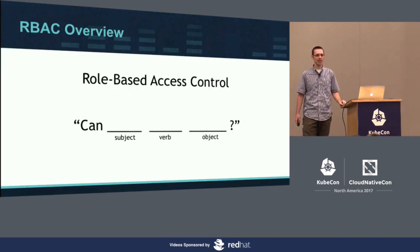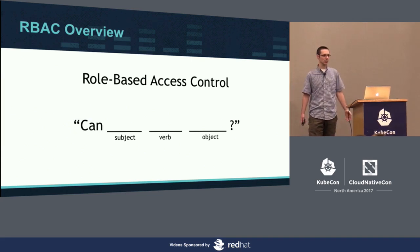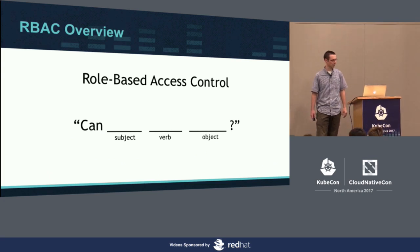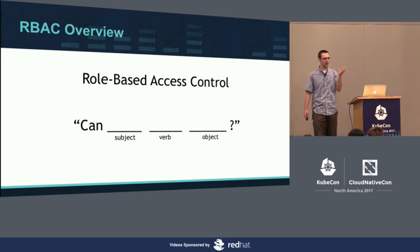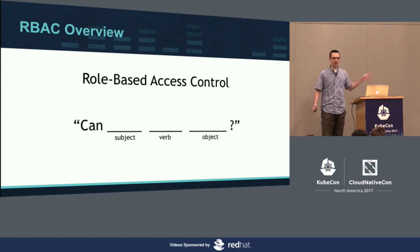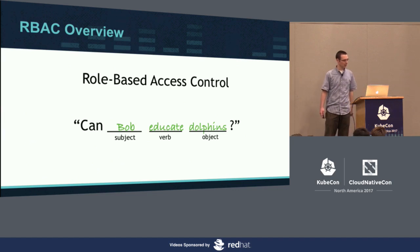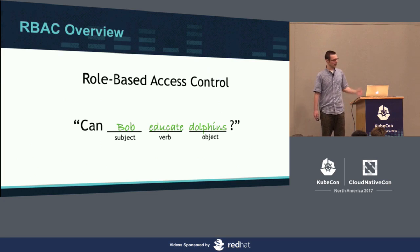What is RBAC? RBAC stands for Role-Based Access Control. It's one of the authorization modes that you can use with your Kubernetes API server, and its job is to answer the question for every request that comes into the server: can the subject submitting this request perform this verb on this object? It's the last session of the last day, so I figured we'd start with a story instead. I'm going to walk you through, conceptually, how the RBAC design is laid out using this question.